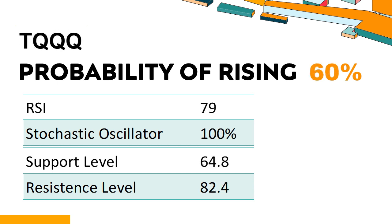What technical signals should you watch for when analyzing TQQQ? TQQQ's 14-Day RSI value was 79. When the RSI exceeds 75, it is considered to be in the overbought region — the stock price may be overvalued and a price correction may be required. This means the stock price has been experiencing a strong uptrend and has risen too fast, causing the RSI to reach a high level.